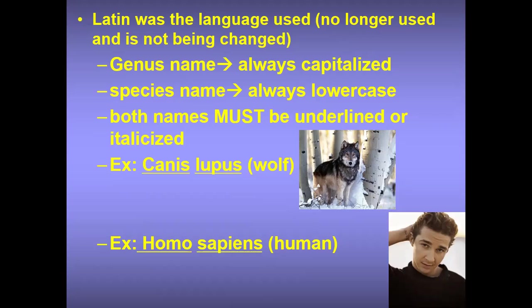The genus name is always capitalized, just like the first letter of our first name. The species name is always lowercase. Both names must be underlined or italicized. For example, Canis lupus is a wolf — anywhere you go in the world, Canis lupus means wolf. Another example is Homo sapiens — yes, humans are Homo sapiens.